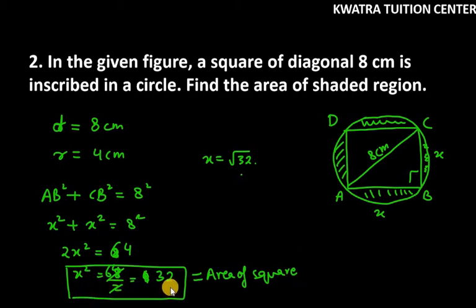So that means my area of square is 32. x² is 32, not √32. I hope you understood this concept. So area of square equals 32.